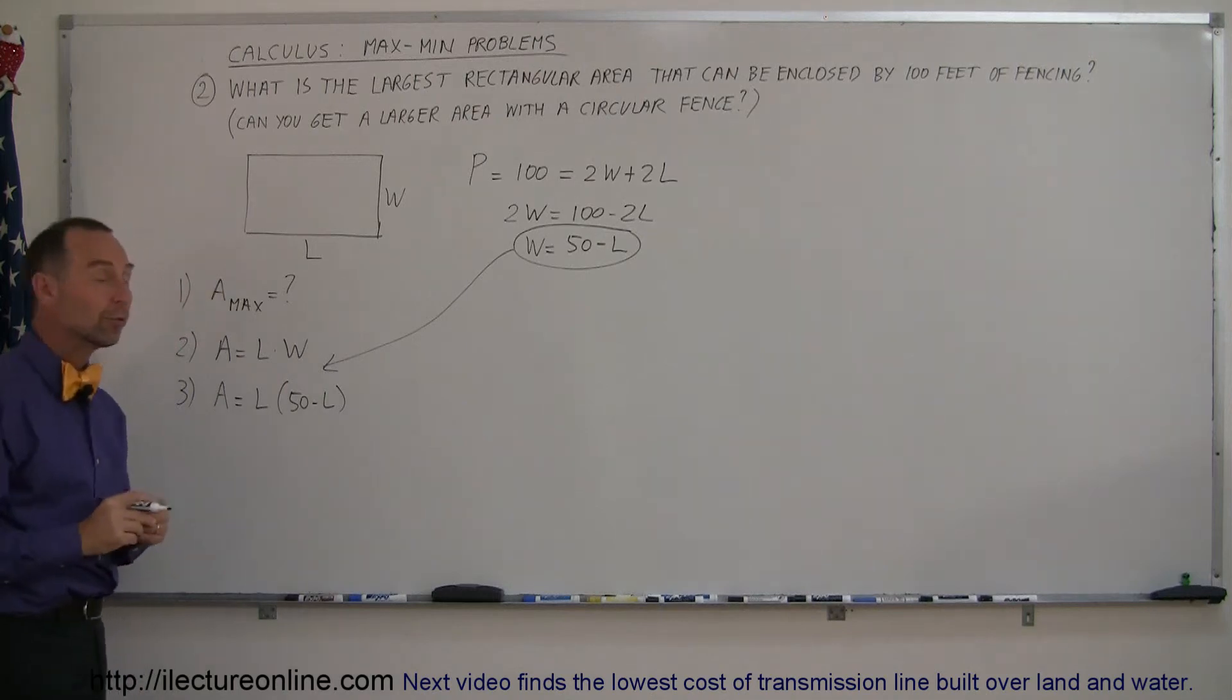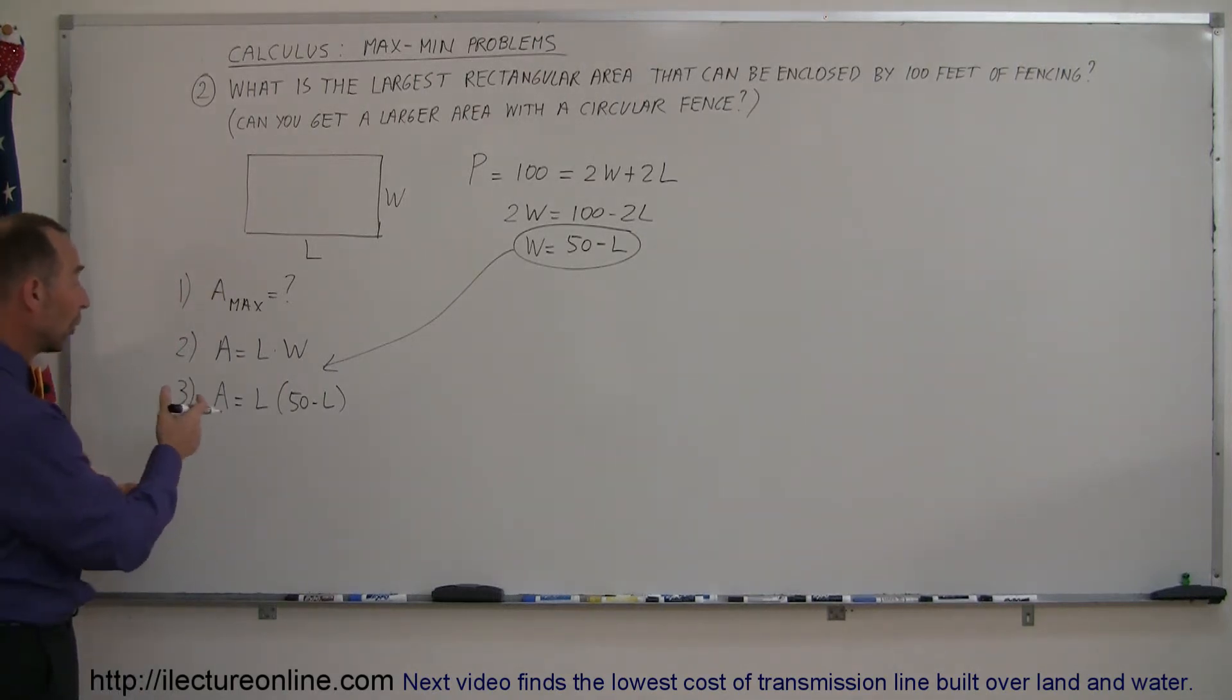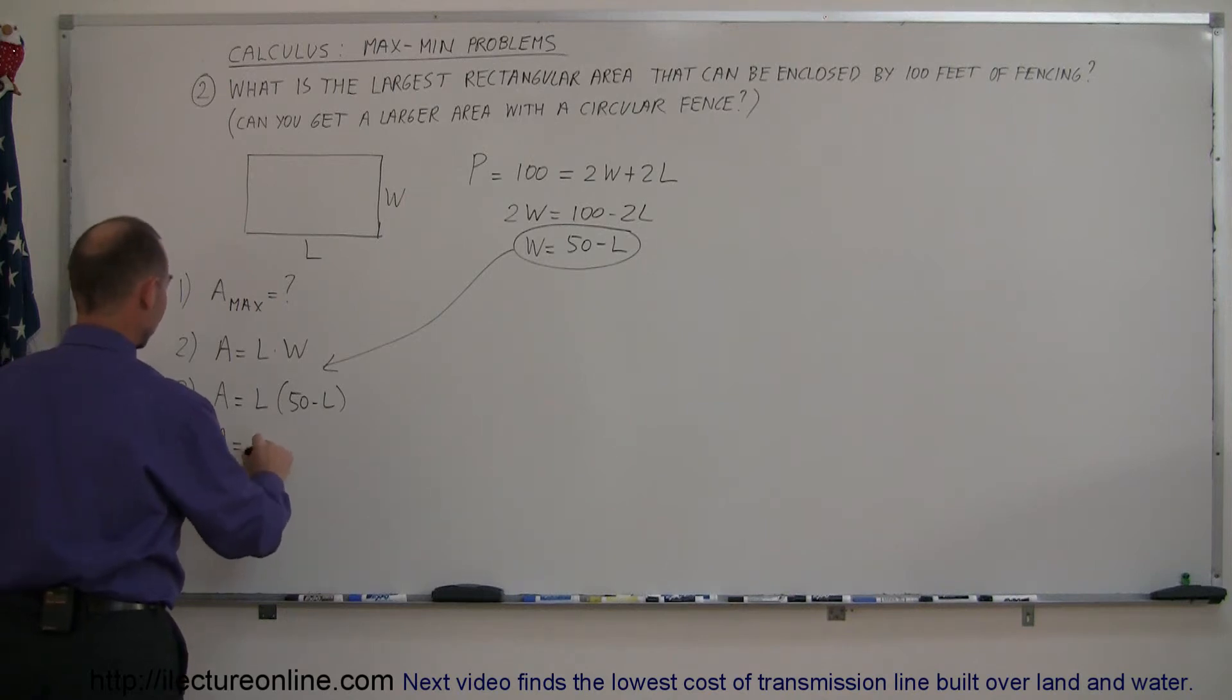And now I have an equation I can move forward with, because there's only one variable left in there, which is L. So simplifying this a little bit, I have area is equal to 50L minus L squared.